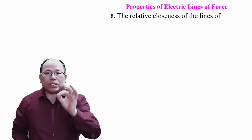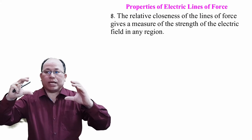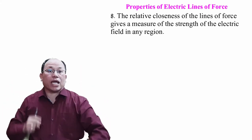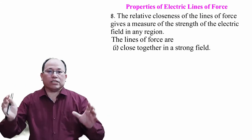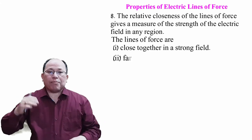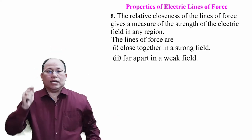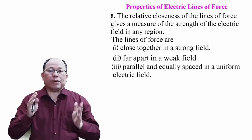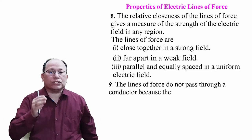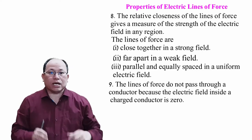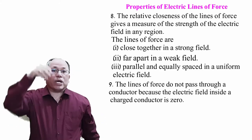The relative closeness of the lines of force gives a measure of the strength of the electric field in any region. Where field lines are closer together, the electric field is strong; where they are far apart, the electric field is weak. Also, the electric field inside a conductor is zero.